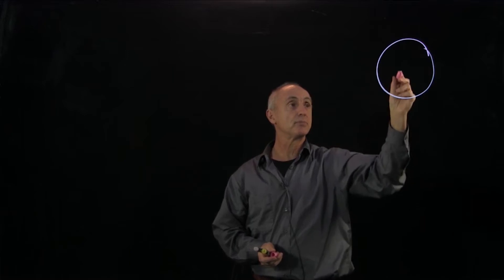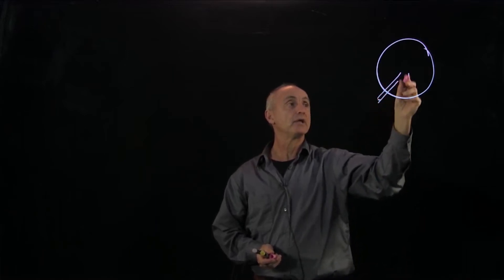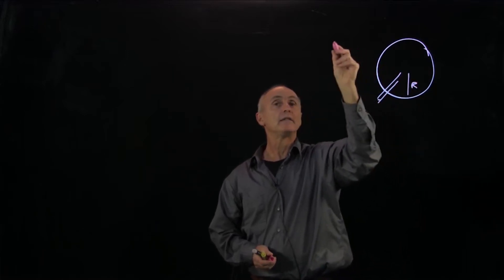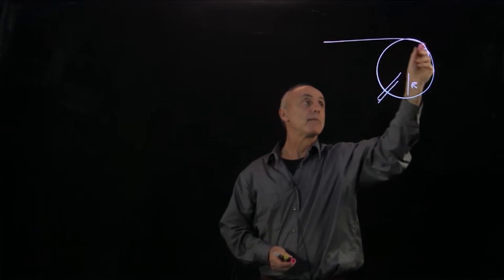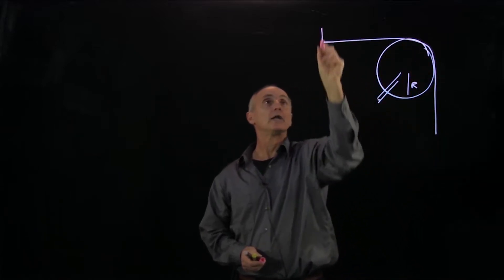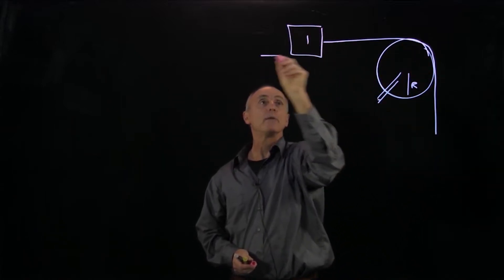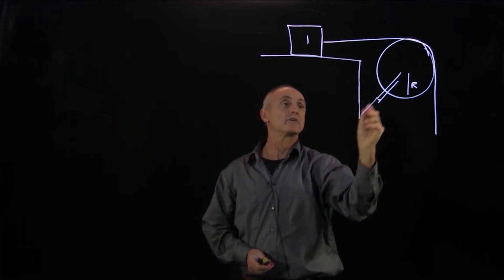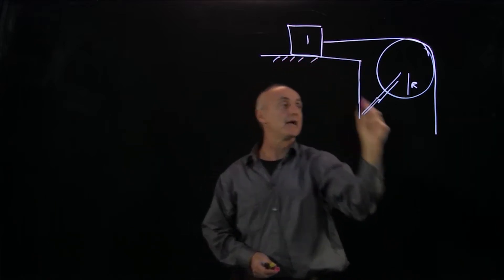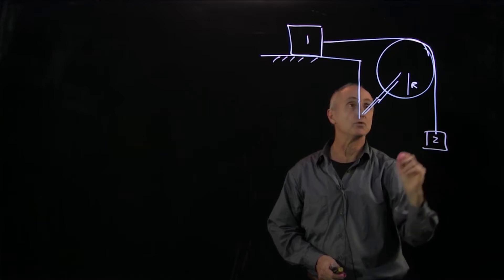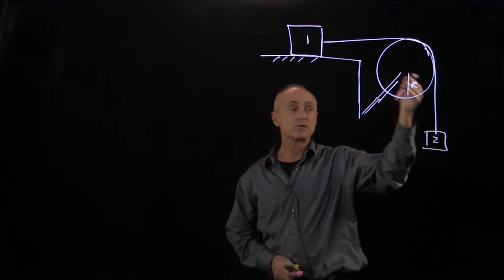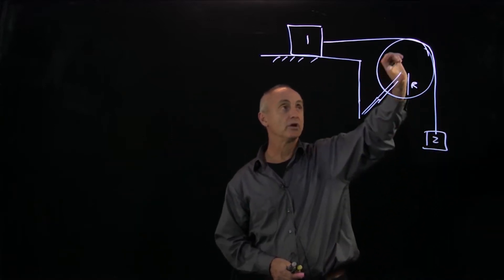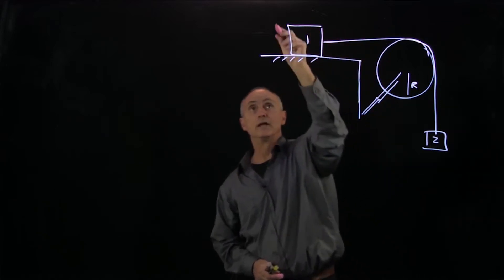I would like to now analyze the motion of a system of particles that has both translational and rotational motion. So I'm going to consider a pulley. The pulley has radius r, and there is a string wrapped around the pulley and a block of object 1 that's on a plane and another block of object 2. As object 2 falls down, the pulley rotates and object 1 moves to the right.